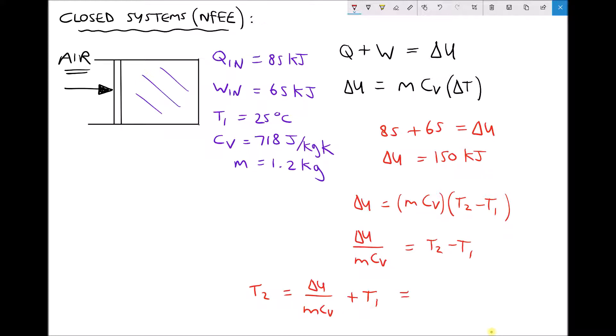Inputting some values we have 150 kilojoules for delta U or 150,000 divided by a mass of 1.2 times a specific heat capacity at constant volume of 718, and to that we're adding the 25 degrees. Giving us a T2 value this time equal to 199.09 degrees C.